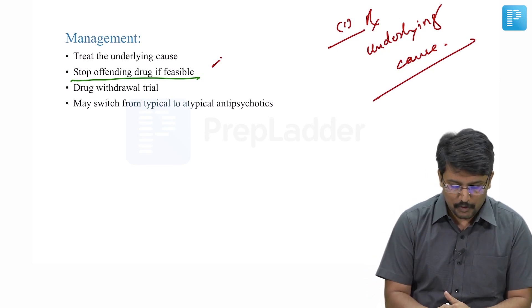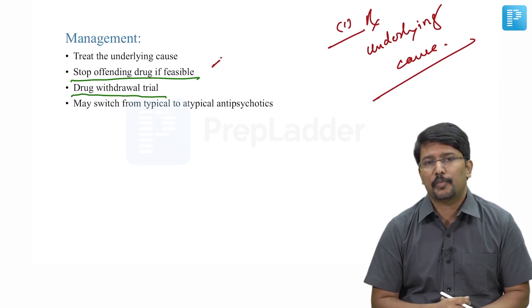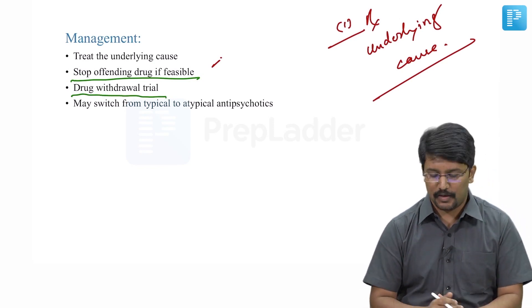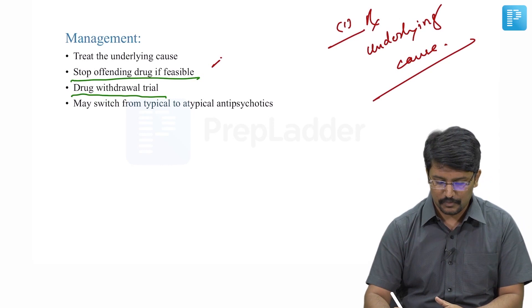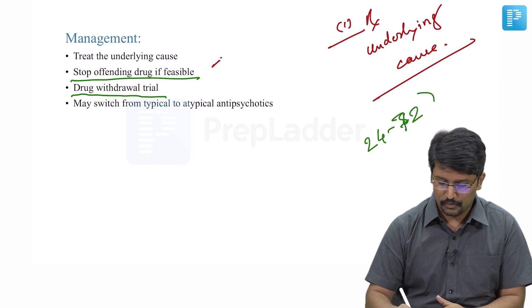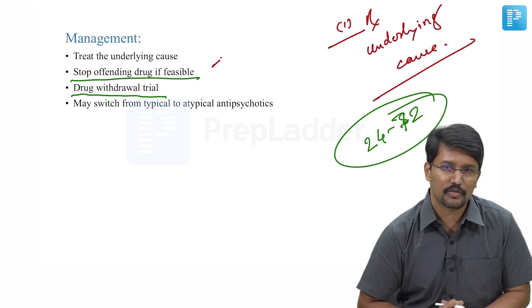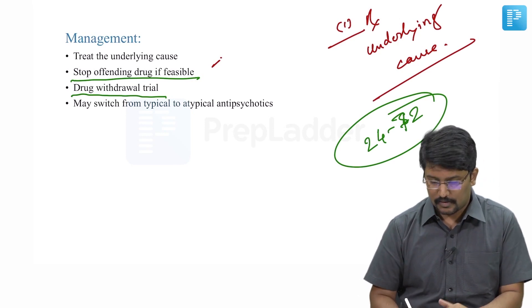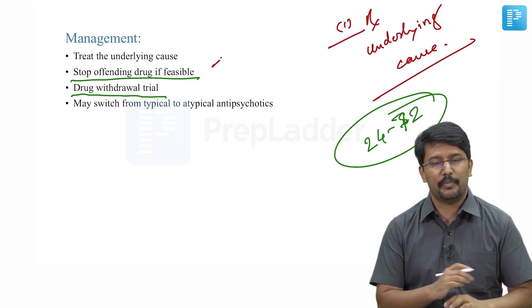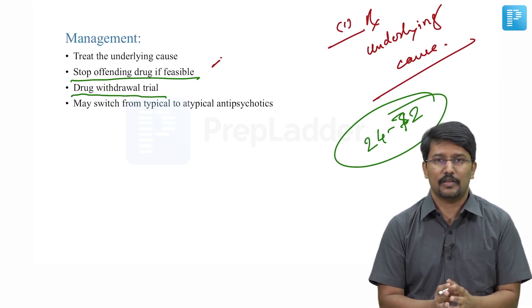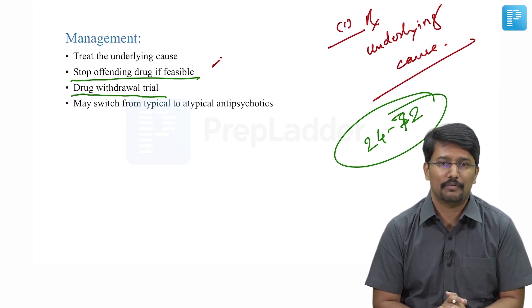In any case, if you are suspecting drug-induced hyperprolactinemia, do give a drug withdrawal trial. Usually after drug withdrawal, prolactin levels return to normalcy anywhere between 24 to 72 hours. So if there is persistence of hyperprolactinemia after 72 hours, then the drug primarily may not be the reason. In that case, look for alternative causes.